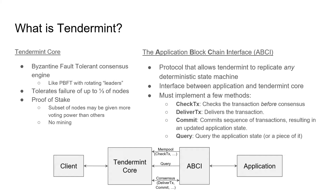The Query method is used to query a piece of the application state — for example, the balance of a single account. Ideally, it should include some kind of proof that the piece of the application state being returned actually belongs to a certain application state with an application hash, though this isn't required. In practice, Merkle trees are often used for this.